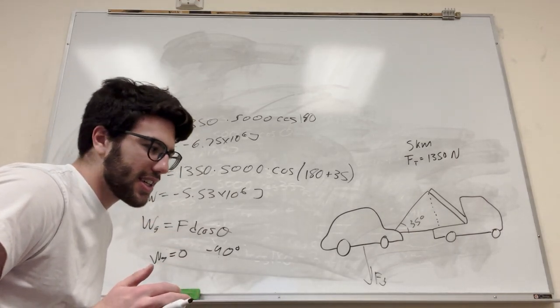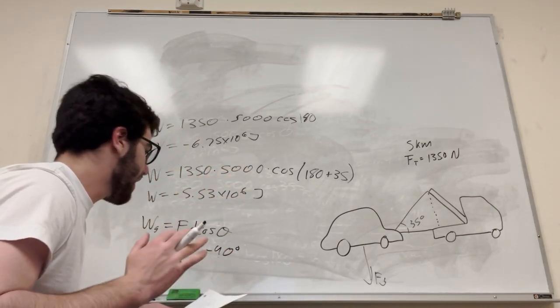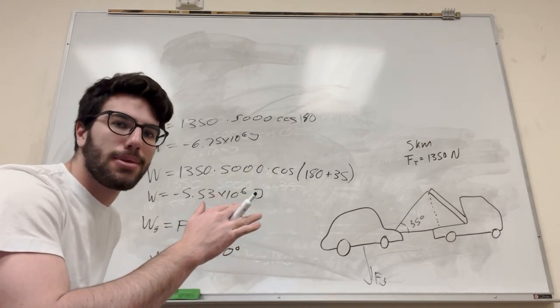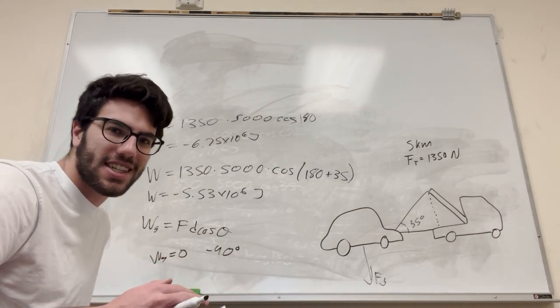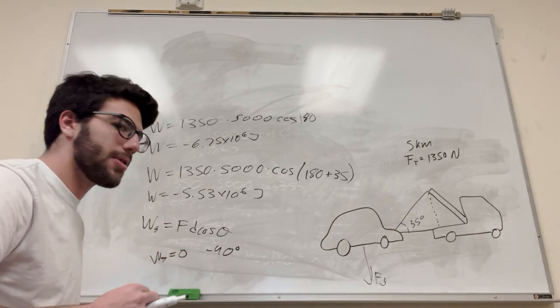That means that the work of gravity is equal to zero. Basically, if there's a force that's going perpendicular to the motion, it's going to have zero work, because it's not actually moving any distance in that direction. So work of gravity is equal to zero.